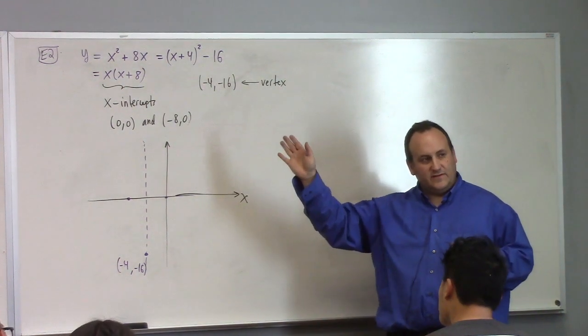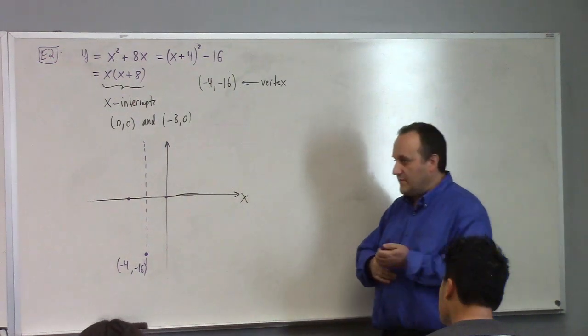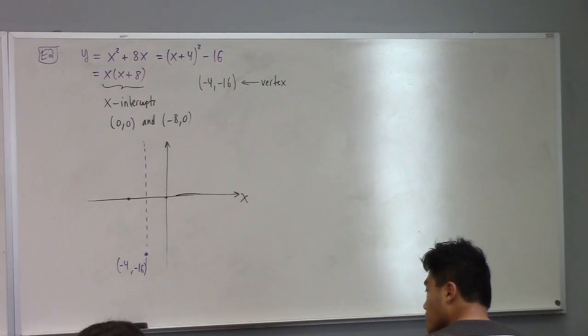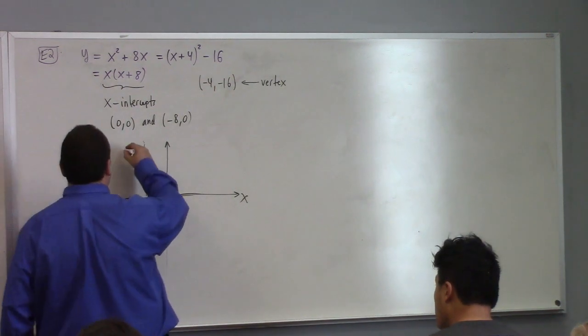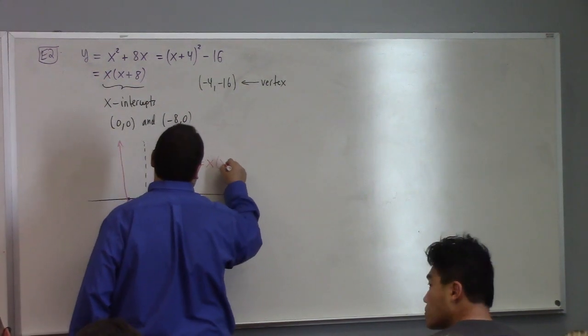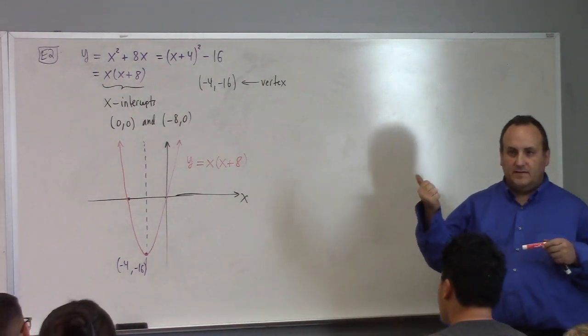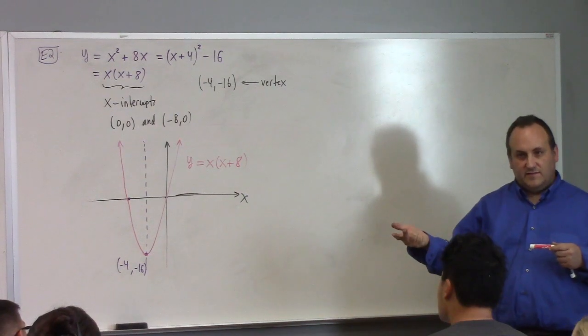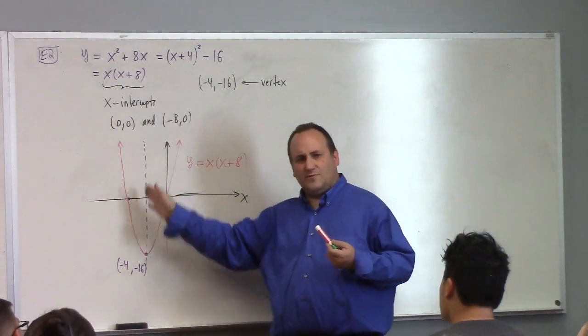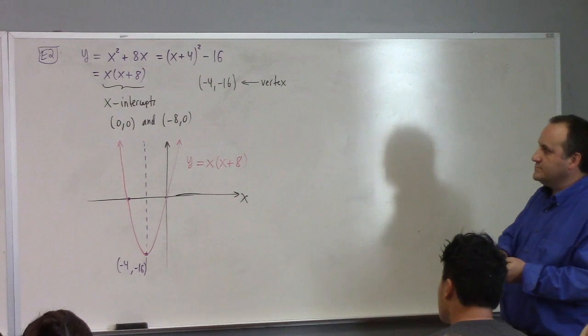So the vertex is at like minus 4 and it's like minus 16 down, so it's like here. It's got x-intercepts at 0, 0 and at minus 8, 0. The dotted line I drew is the axis of symmetry of the parabola. It's always this way. The axis of symmetry goes through the vertex of the parabola, and the x-intercepts, if it has any, they're symmetric on one side and the other of the line of symmetry. So the graph here looks like something kind of like this.